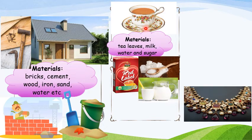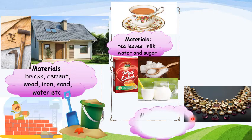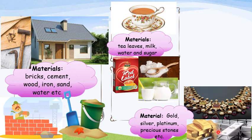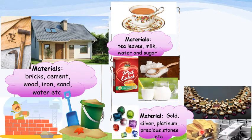Very good. Children, what is this? A necklace — a beautiful necklace. So what are the things we need for making a necklace? Gold, silver, platinum, and precious stones, etc. These are the materials we need to make jewelleries. This is a picture of silver and gold bricks, and these are the precious stones which we mainly need for making jewelleries.